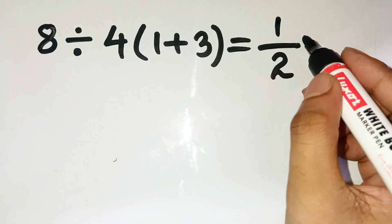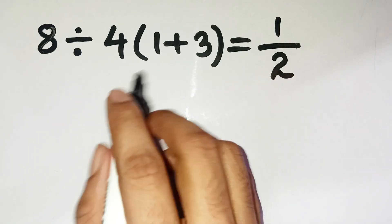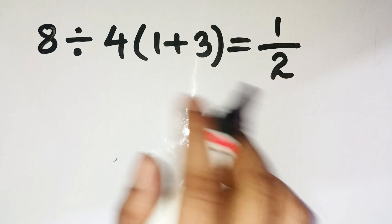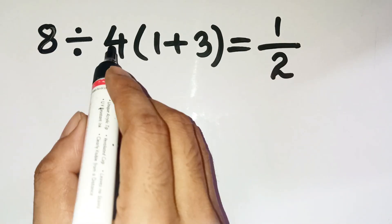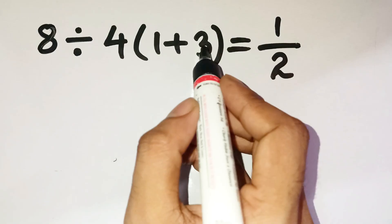If you rush to say one half, slow down. There's a sneaky detail everyone overlooks. Yeah, at first glance, it looks so simple. 8 divided by 4, open bracket 1 plus 3, close bracket.